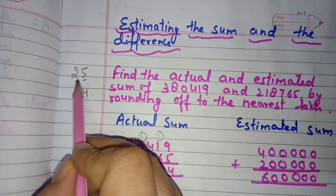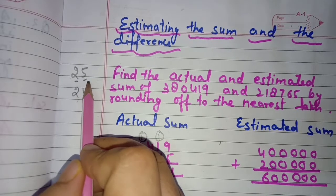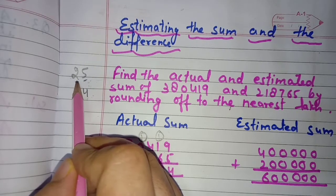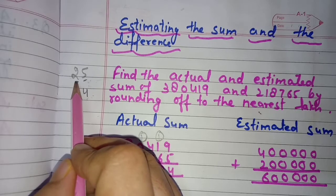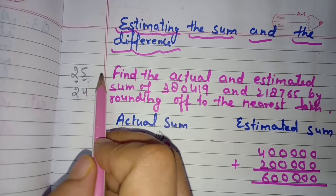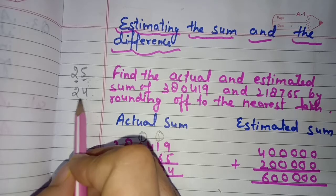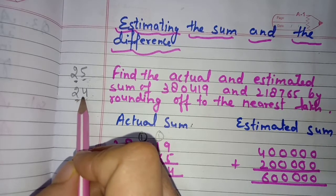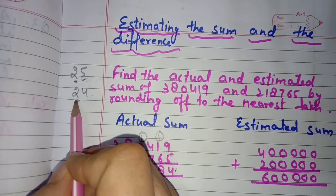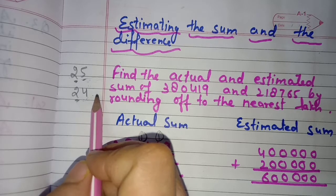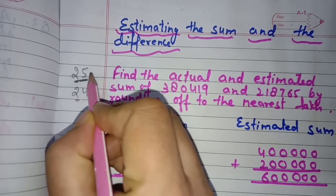For example, in 25, if I have to round off 2, the number next to its right side is 5. Since this number is 5 or more than 5, the number being rounded off gets increased by 1, becoming 3, and all numbers to its right side are written as zeros. In the second example, if the digit to the right is less than 5, then 2 will remain 2 but all numbers to its right will become zeros.